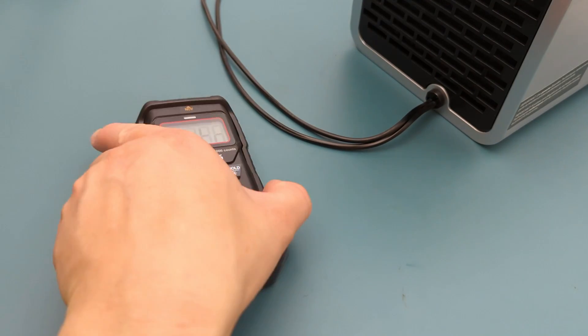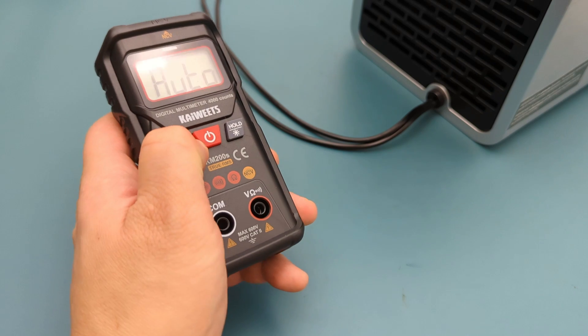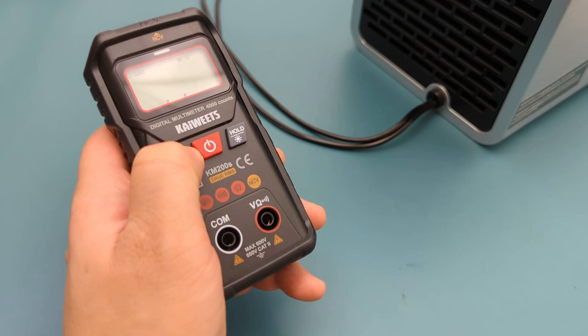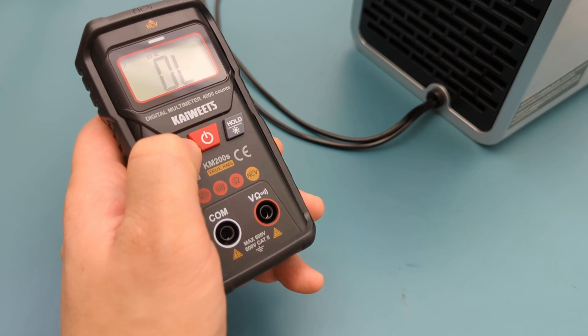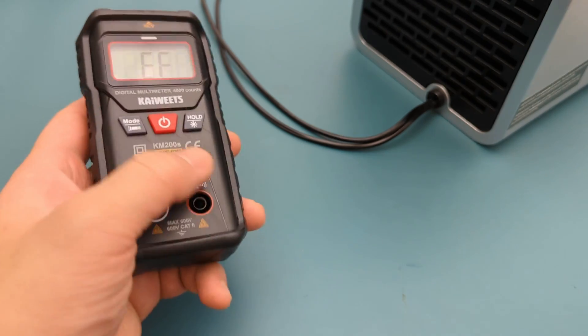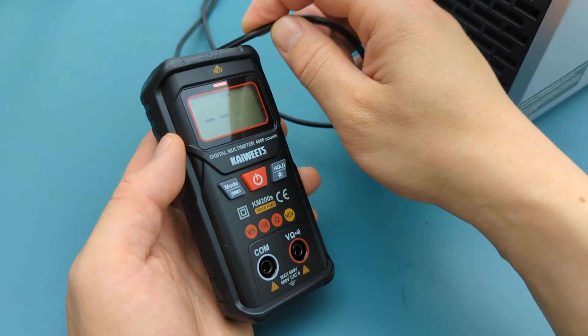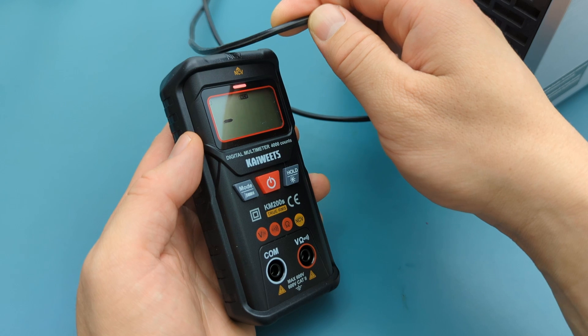The next step is to perform the non-contact AC voltage test. Press the function button to set the meter to the NCV mode. The tip of the meter is the NCV probe. When a strong electric field signal is detected, the meter starts beeping.